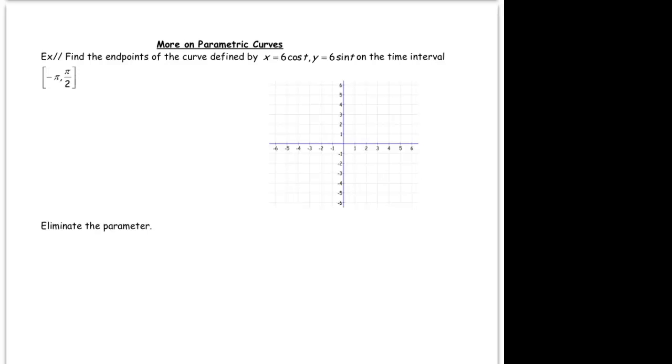I've got a parametric equation: x equals 6 cosine of t and y equals 6 sine of t. And I am graphing it on the time interval negative pi to pi over 2.